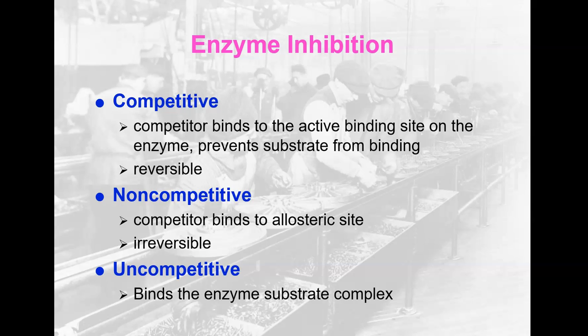In noncompetitive inhibition, the competitor binds on the allosteric site, not on the active site. When it binds to that site, it changes the conformation of the enzyme and changes the shape of the active site, which prevents the substrate from binding. The binding of the competitor on the allosteric site is an irreversible bond, so it just inactivates that enzyme. In uncompetitive inhibition, a molecule will bind when the substrate is already bound to the enzyme — think of it as a lid binding on the enzyme-substrate complex, preventing the reaction from happening and the product from being released.